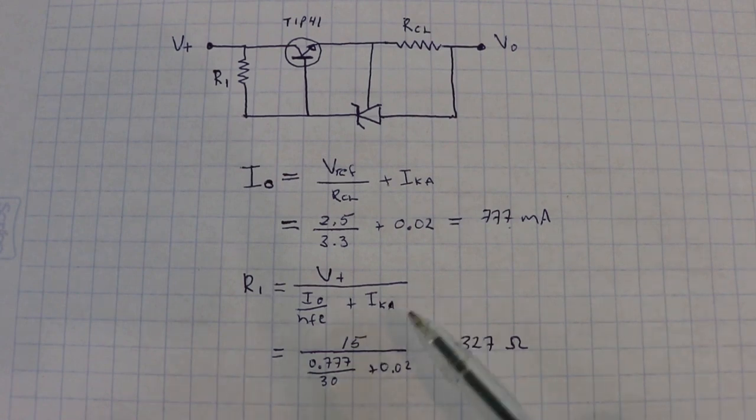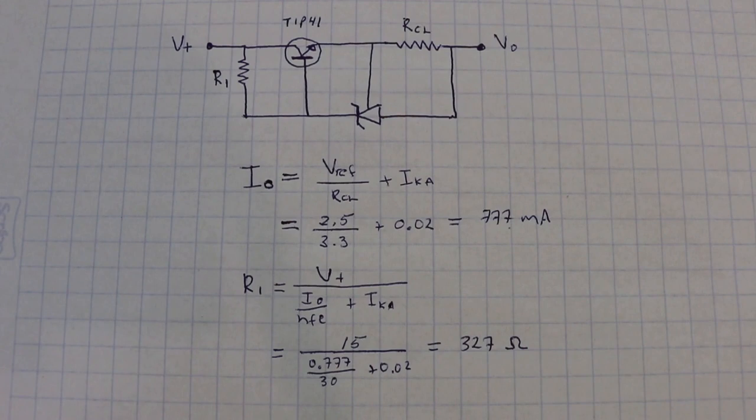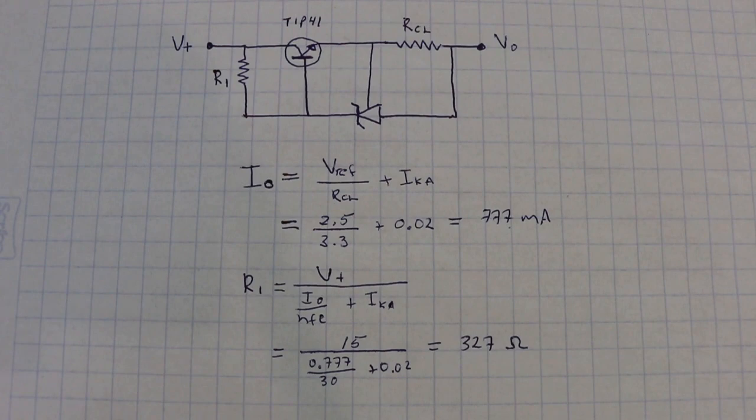For this transistor is around 30, plus this current, 20 milliamps, and this gives a value of 327 ohms. So, we will use 330, which is the most close commercial value.